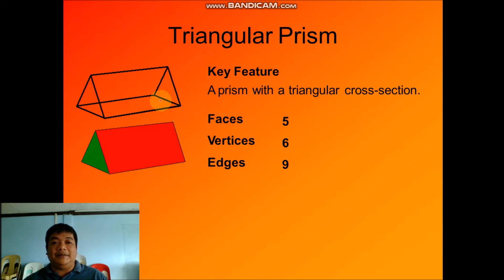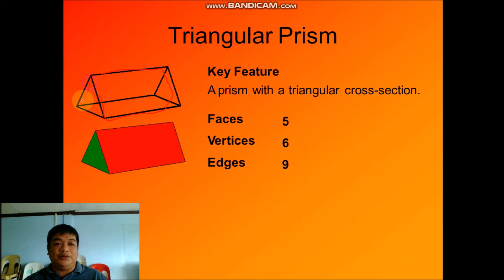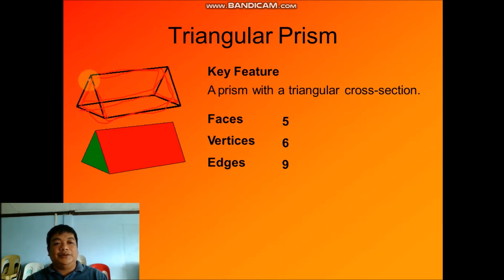The key feature of a triangular prism is that it has a triangular cross section. It has five faces: one, two, three, four, five. For the vertices, we have one, two, three, four, five, and six — so six vertices. For the edges, we count one, two, three, four, five, six, seven, eight, nine — so there are nine edges.